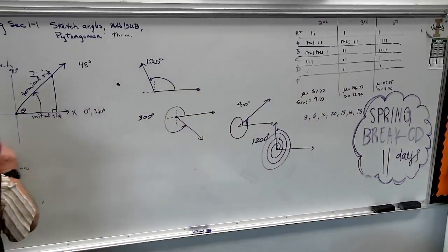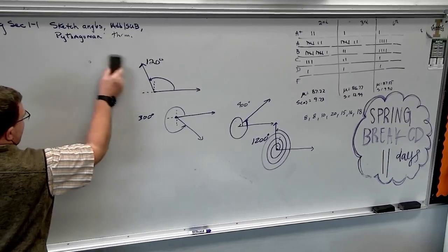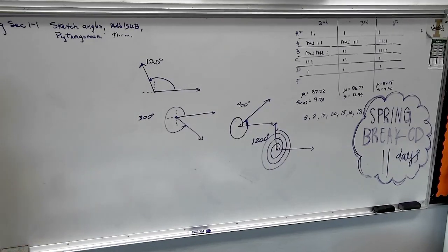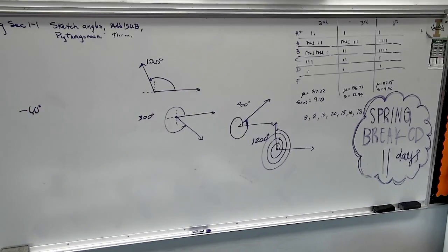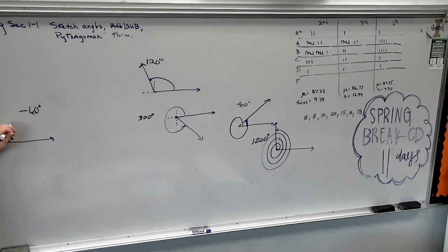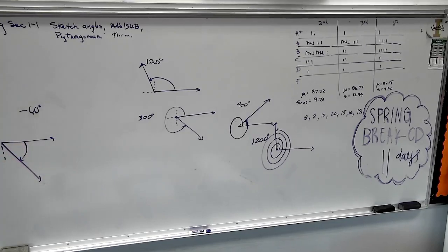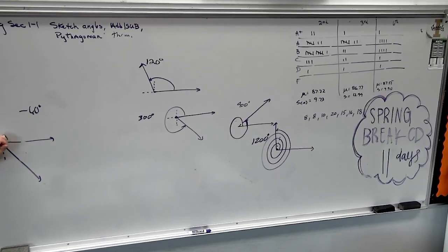Let's mix it up even more — how about a negative angle? How would you sketch a negative angle? Just draw the arrow backwards. Instead of going counterclockwise, we're dropping clockwise. So negative 60 would look like this — going down from the positive x-axis. Do you see again why the arc is important? Without it you can't tell if it's negative 60 or 300 degrees. They're actually the same angle — they're called coterminal angles. That's another day.